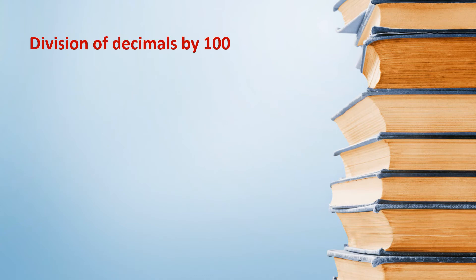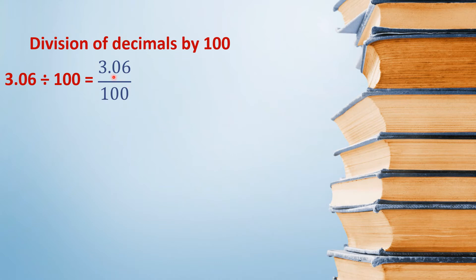Now, division of decimals by 100. Question: 3.06 को 100 से divide करना है. तो इसे हम ऐसे लिख सकते हैं — 3.06 by 100. अब इस 3.06 को, जो की एक decimal नंबर है, fraction में convert करते हैं: 306 by 100 हो जाएगा.